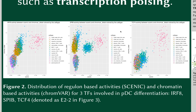But for some transcription factors, such as SPIB or IRF8, we can see a more complicated relationship, where increased accessibility-based activity is observed in many different cell types, including all of the different myeloid cells, as well as B-lymphocytes and plasmacytoid dendritic cells.